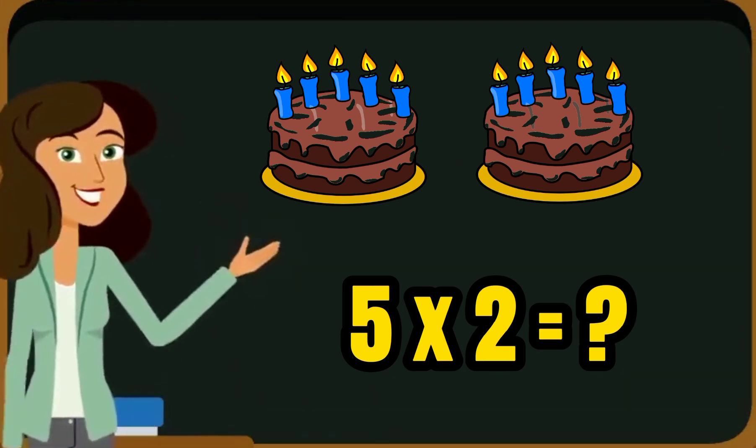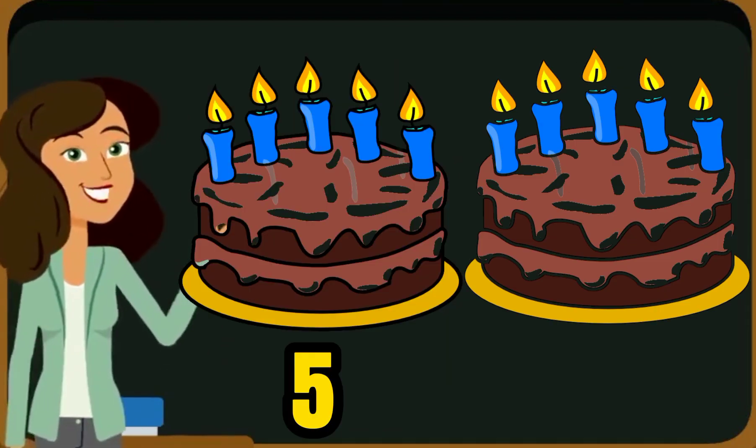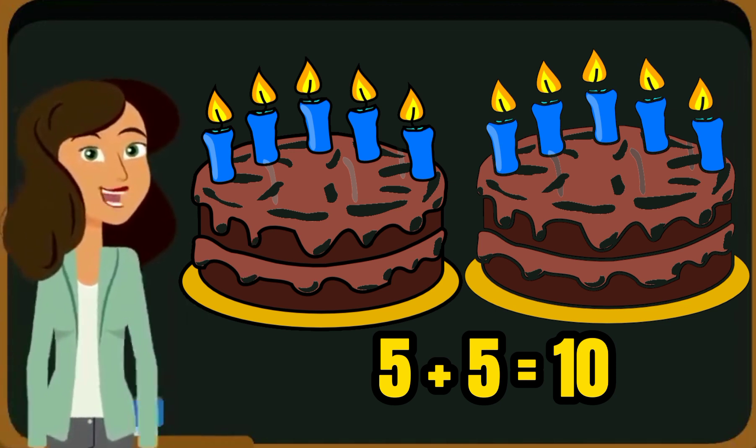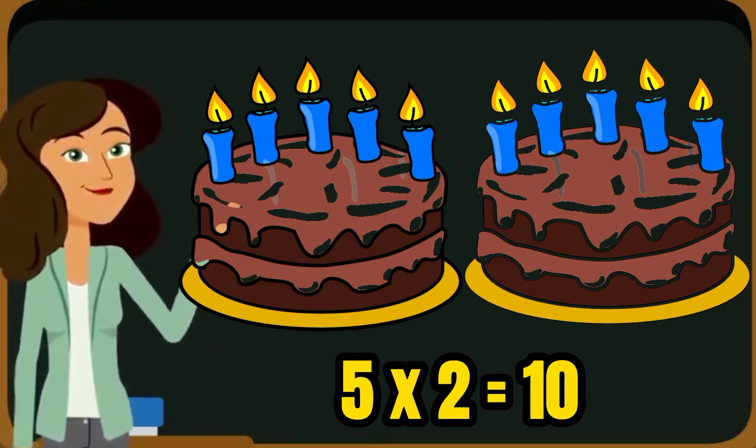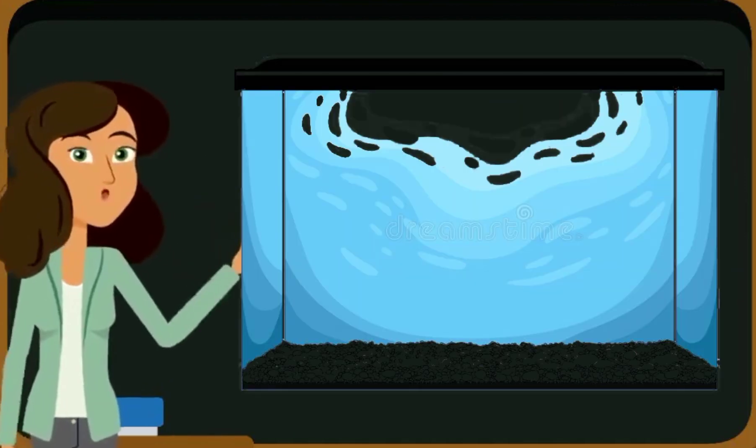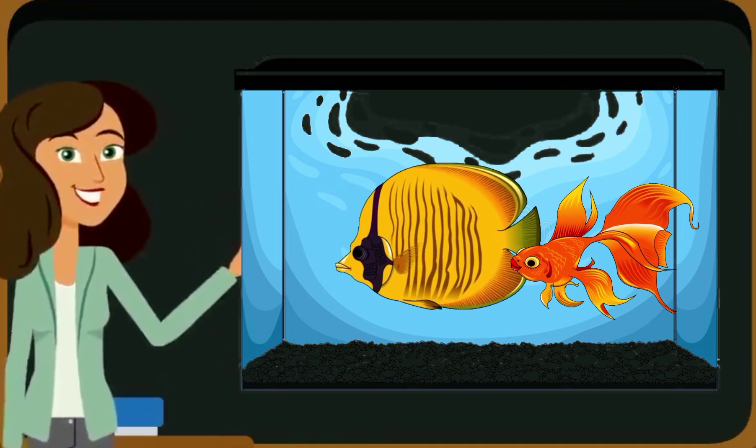Let's count candles individually like five and then five. So five plus five is equal to ten. Exactly, and five into two is also ten. Good job.